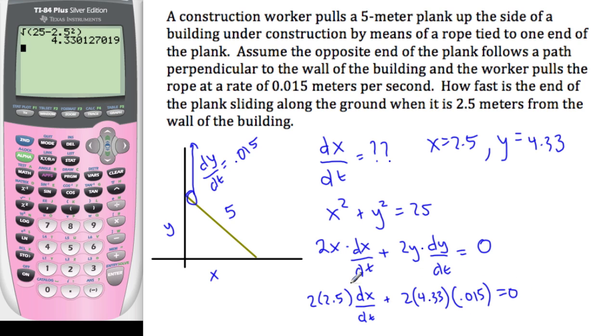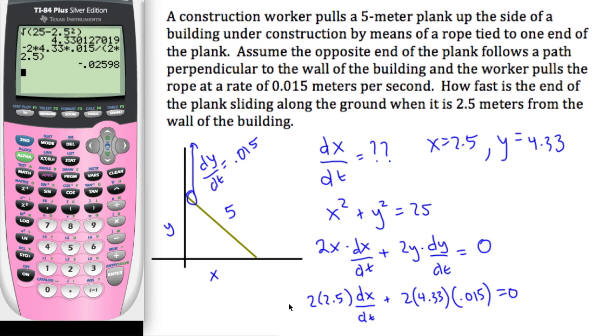So if I solve for dx/dt, I'm going to get minus 2 times 4.33 times 0.015 divide, parentheses, 2 times 2.5. And that should be it. It's 0.0259. So dx/dt is equal to negative 0.0259.